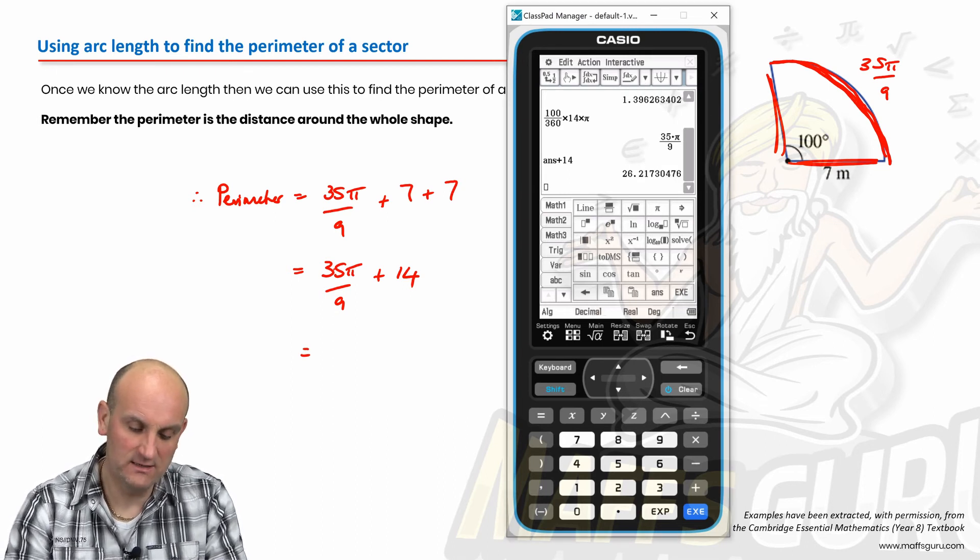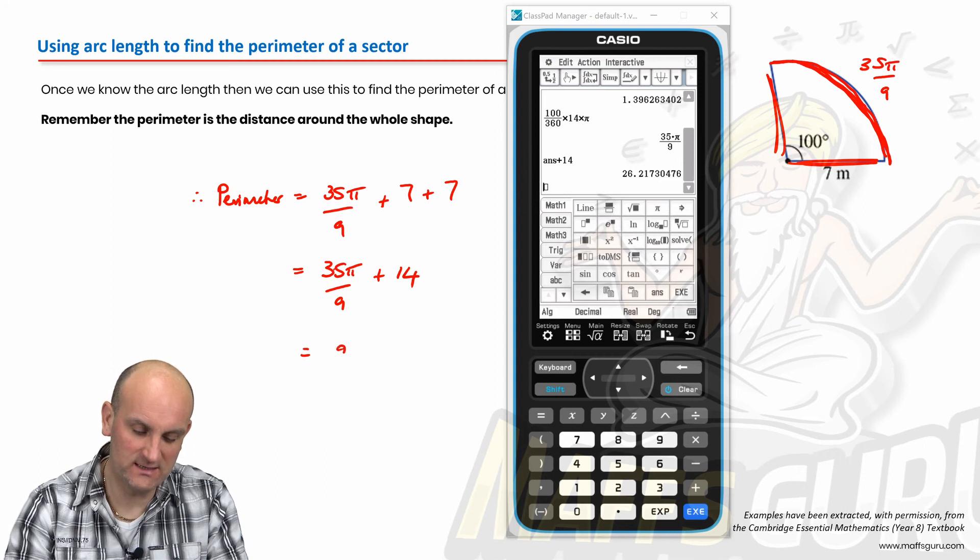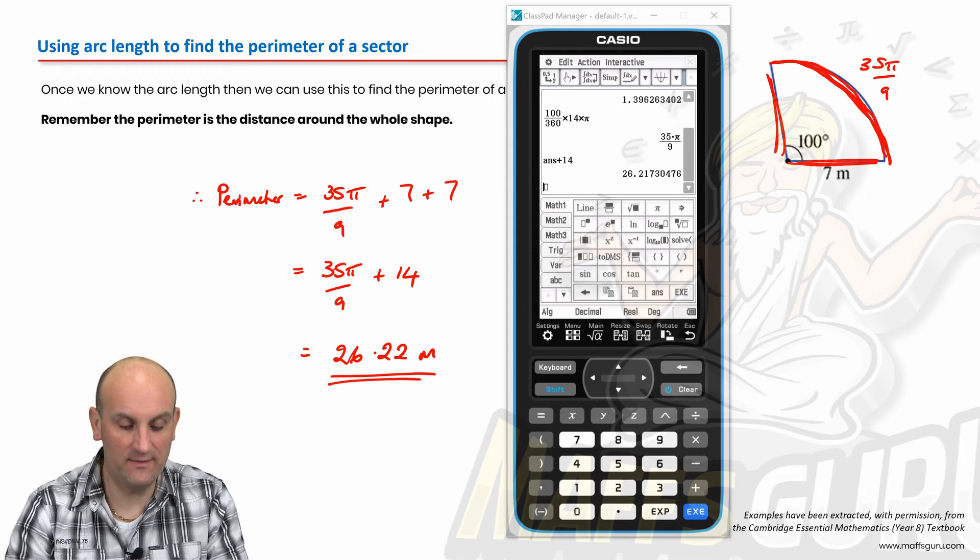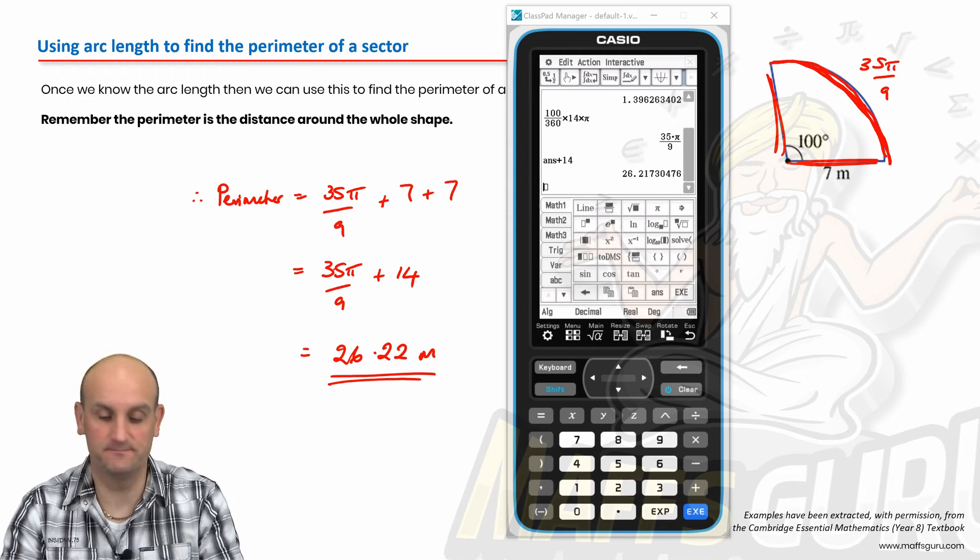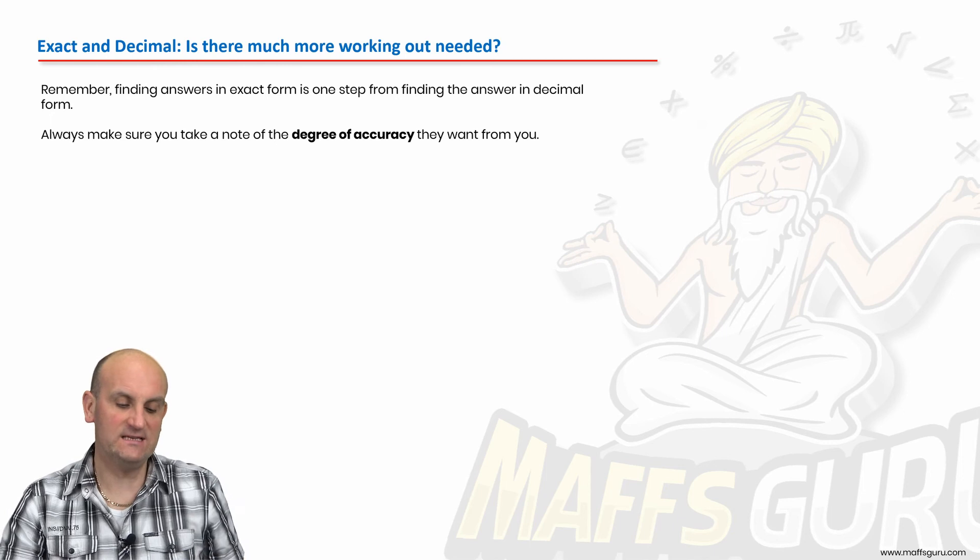So actually, I'm going to turn around and say, can you just give me that as a decimal so that it makes some sense to me, which gives me 26.22 metres. And that is just my circumference.